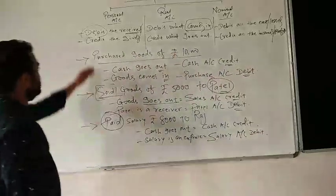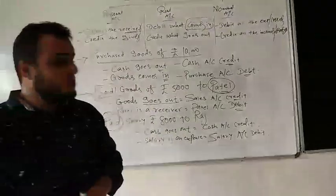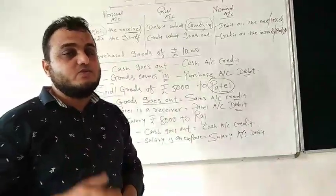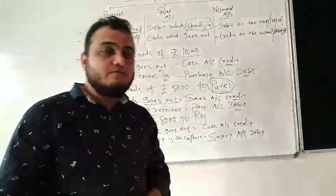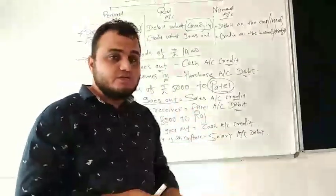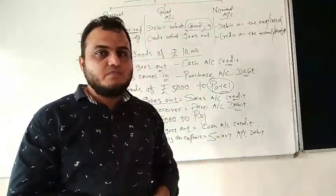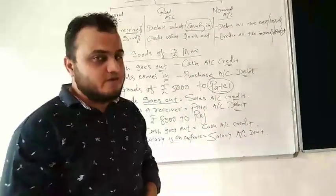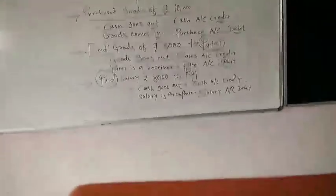So transactions number one, two, and three are done for today. It's just the beginning — it will take around fifteen to twenty days to fully understand journal entries. Please copy this in your notebook, and if you have any questions or doubts, you can ask anytime through the comment option or the helpline number. Thank you very much.